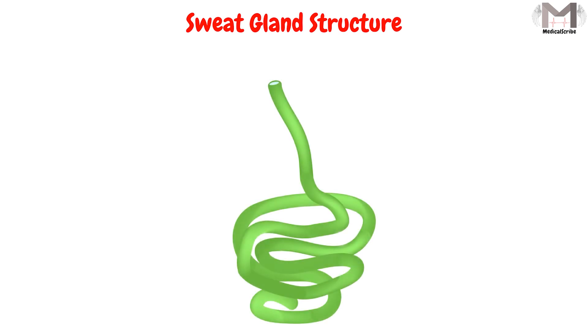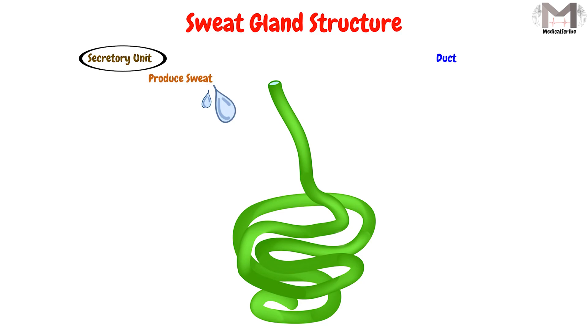Now let's talk about the structure of a sweat gland. Every sweat gland is composed of two major parts: the secretory unit, which produces sweat, and the duct, which carries the sweat away.